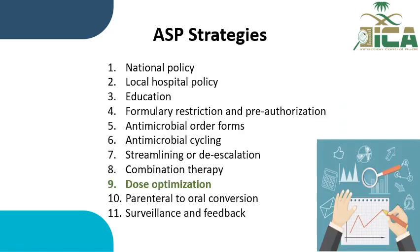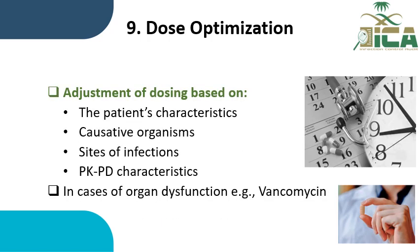The next strategy is antibiotic dose optimization — adjustment of antibiotic dosing based on the patient's characteristics, causative organisms, sites of infection, and pharmacokinetic and pharmacodynamic characteristics of the antibiotics. Some antibiotics like vancomycin and aminoglycosides need monitoring in cases of organ dysfunction, for example renal failure. Therapeutic drug monitoring forms are available in the MOH latest antimicrobial guideline.